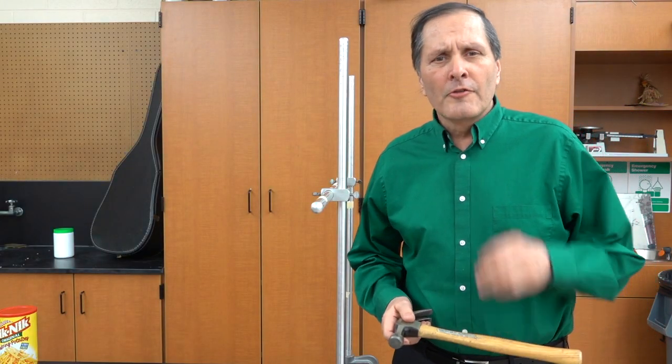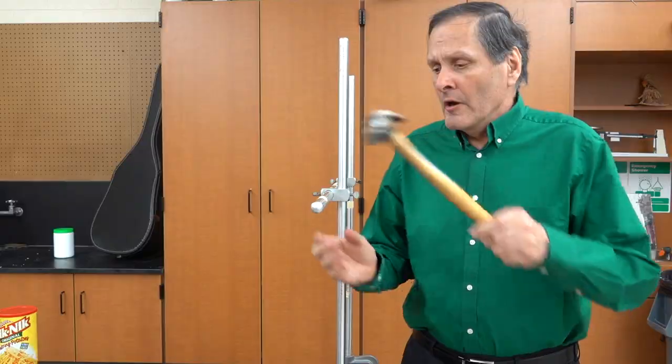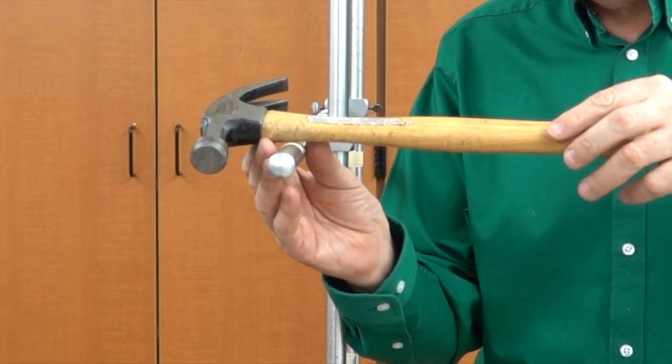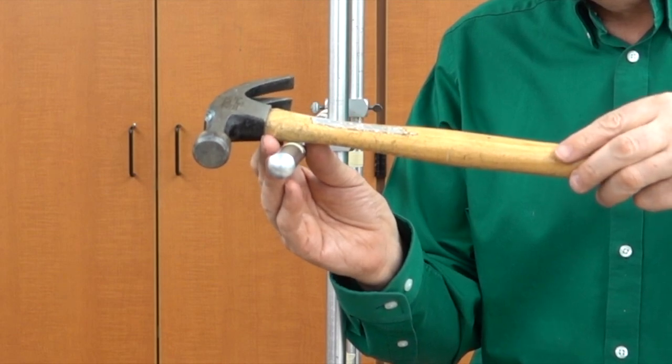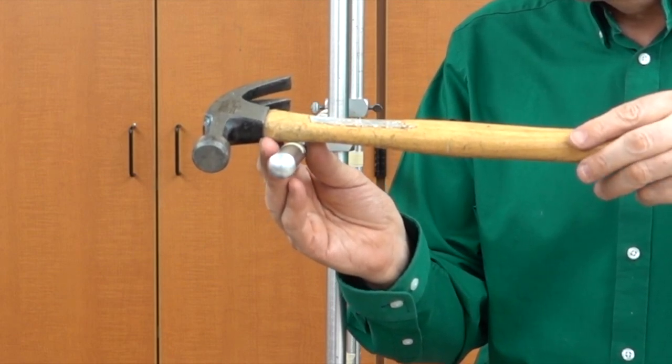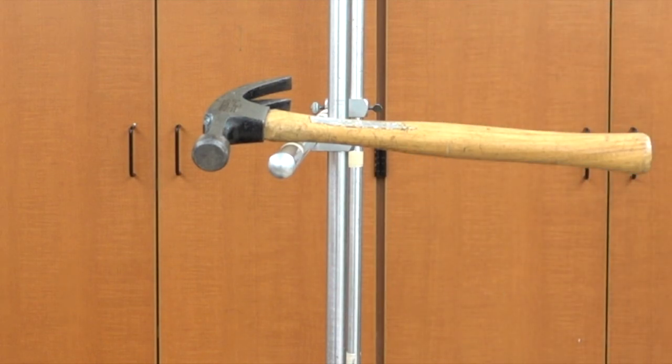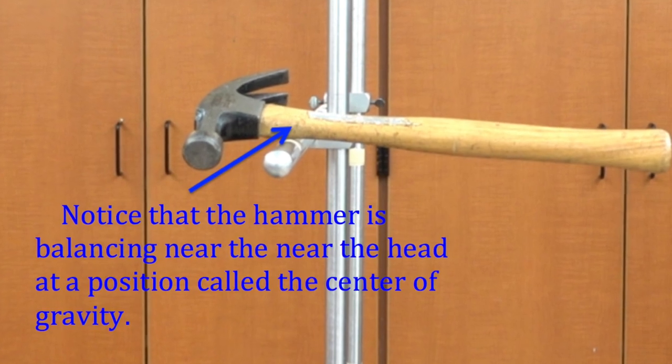Now when we're looking at balancing objects, there's all sorts of tricks that you can do out there. It can be as simple as taking this hammer and seeing if I can balance it on the pole. If I find that right position right there, it balances. The bar is supporting that hammer at its center of gravity.